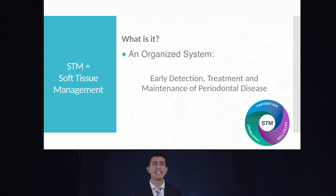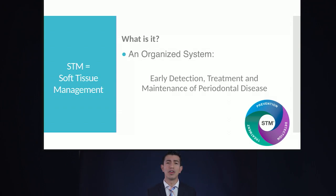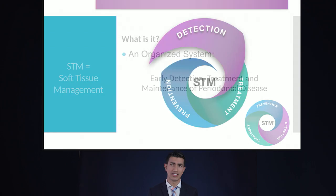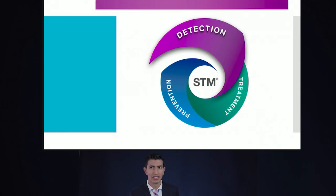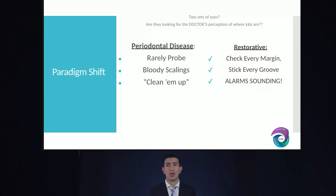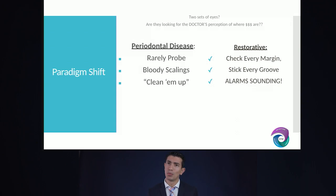STM is a soft tissue management program — an organized system for early detection, treatment, and maintenance of periodontal disease. Let's start with the first area: detection. Normally when we're doing an exam, we tend to focus more on the restorative side of our treatments. We check every margin, we stick every groove, and we sound the alarms whenever we see something that doesn't quite make sense.